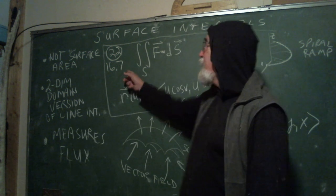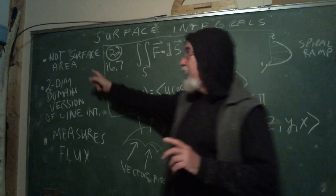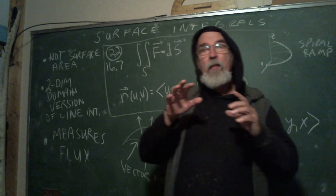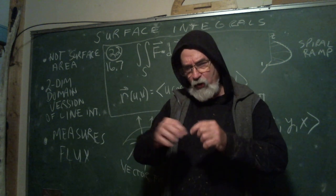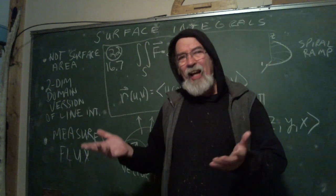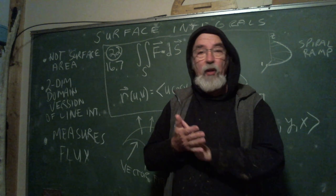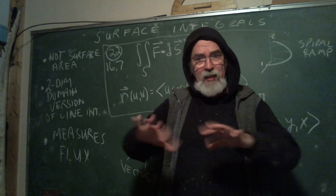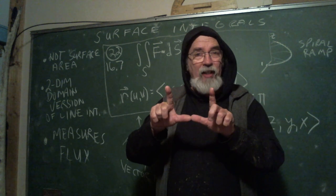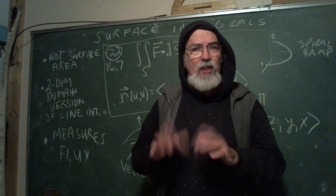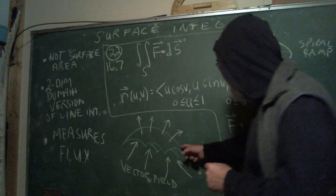This is problem 22 from 16.7, a surface integral — not surface area, a surface integral. The wording is meant to be the two-dimensional version of a line integral. Remember, a line integral's domain was a curve — 'line' being a generic word for curve. Here we have a surface integral, so the domain can be some lumpy surface. Instead of a little box for x and y or a flat two-dimensional region, the region can be bumpy, and it measures flux.